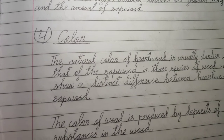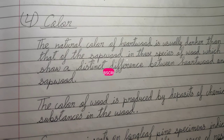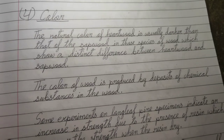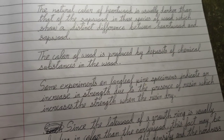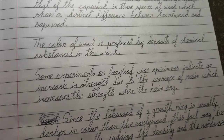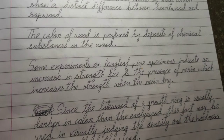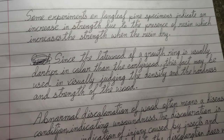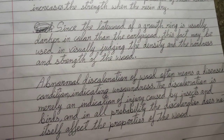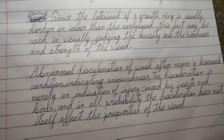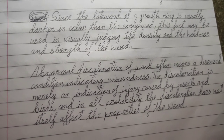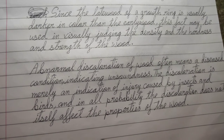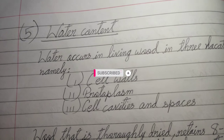The natural color of heartwood is usually darker than that of sapwood in species that show a distinct difference between heartwood and sapwood. The color of wood is produced by deposits of chemical substances in the wood. Some experiments on long leaf pine specimens indicate an increase in strength due to the presence of resin, which increases the strength when the resin dries. Since the latewood of a growth ring is usually darker in color than the early wood, this fact may be used in visually judging the density, hardness, and strength of the wood. Abnormal discoloration of wood often indicates a diseased condition or injury caused by insects and birds, though discoloration does not necessarily affect the properties of the wood.